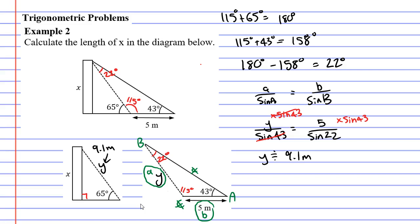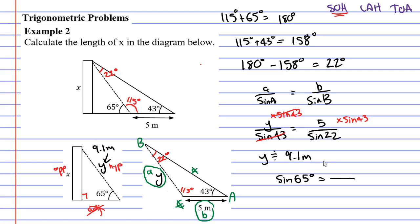Y is our hypotenuse. X is going to be our opposite, and adjacent is down here — so we're not using adjacent, we're using opposite and hypotenuse. I'll write my acronym up the top: SOH-CAH-TOA. Because I'm using opposite and hypotenuse, I'm using SOH — sine in this case. So, sine of my angle, which is 65 degrees, equals — and if we look at the order of SOH, O comes next, H comes last — which means our opposite X goes on top, and our hypotenuse, which is 9.1 metres, goes on the bottom.